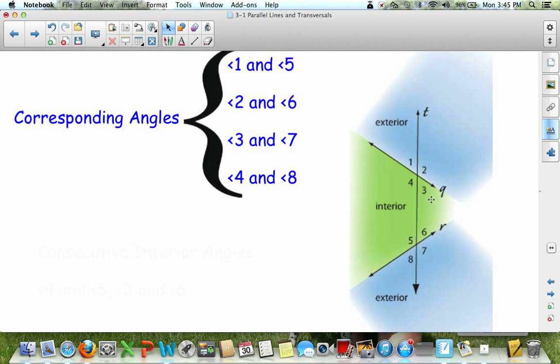So 2 and 6, they're in the upper right, upper right. 3 and 7 are on the lower right of each line, and 4 and 8 are on the lower left. Therefore, they are corresponding angles.